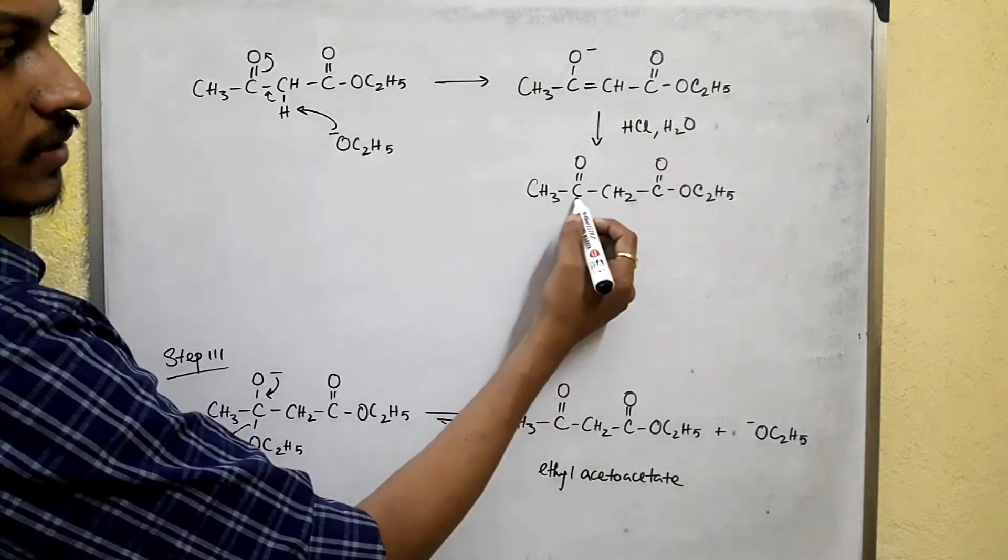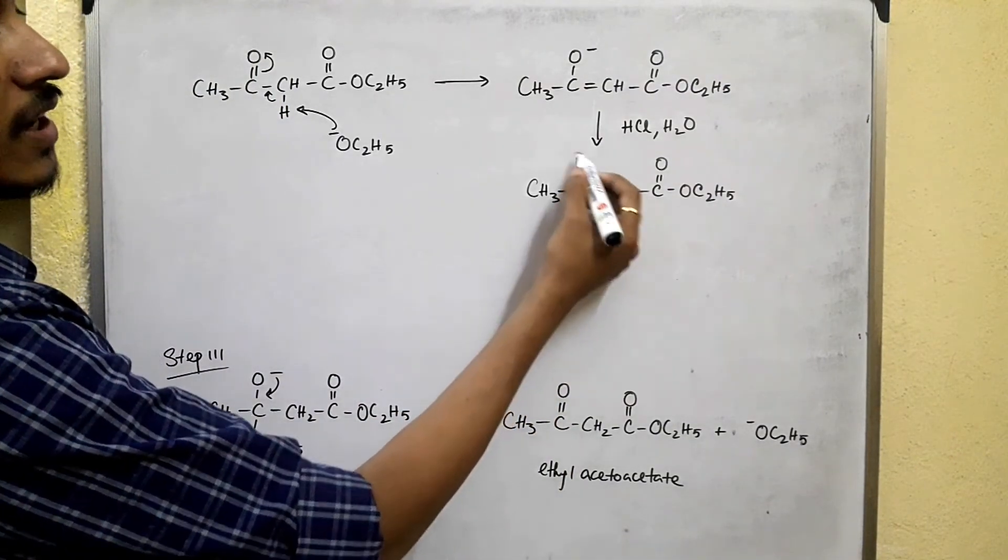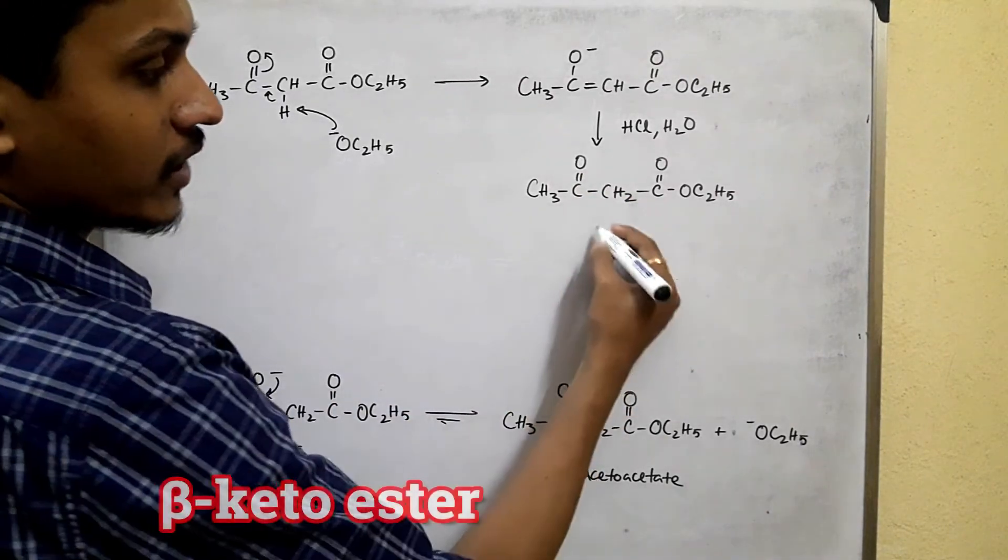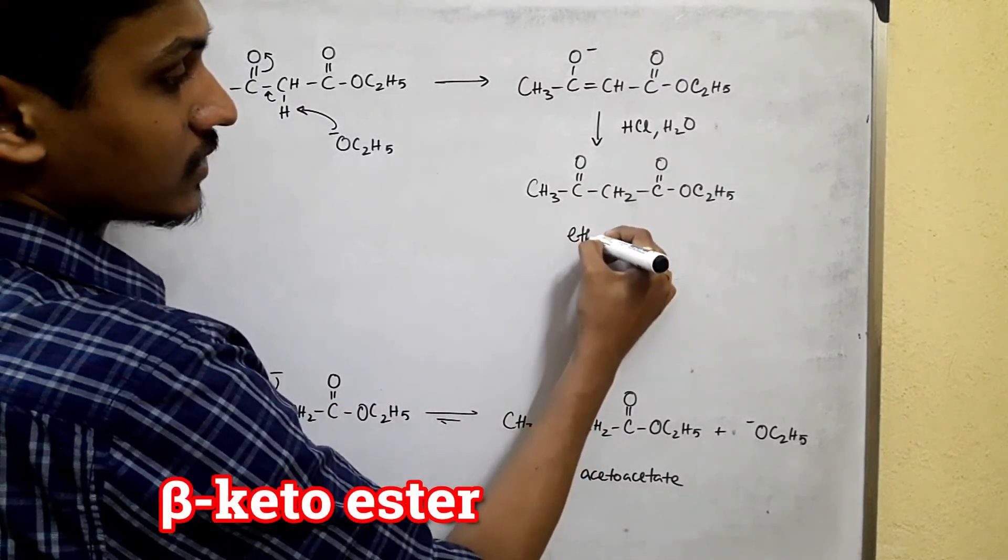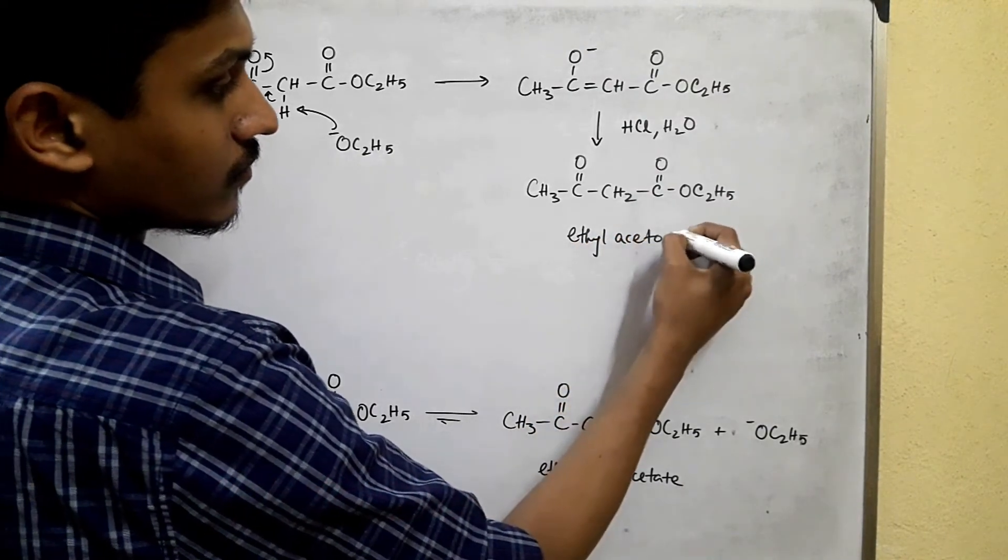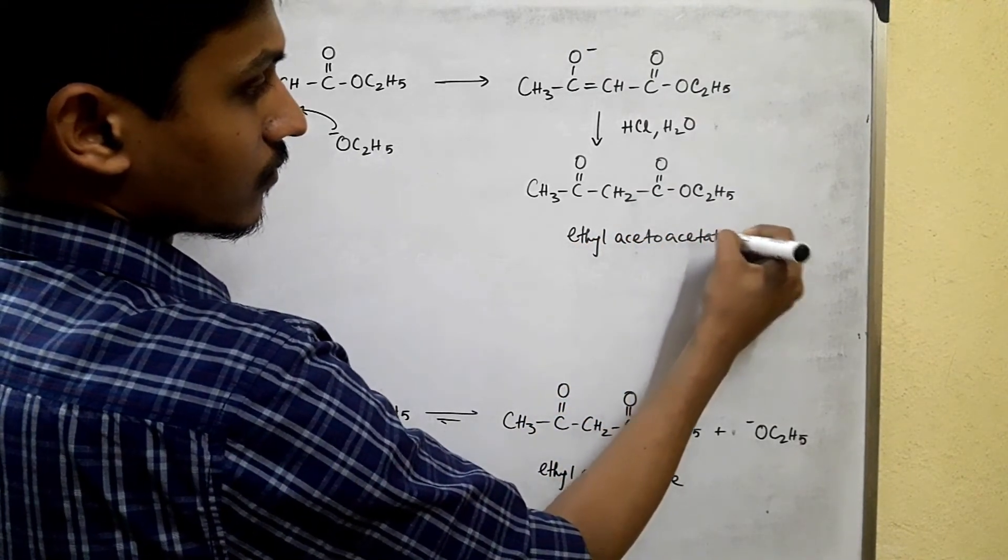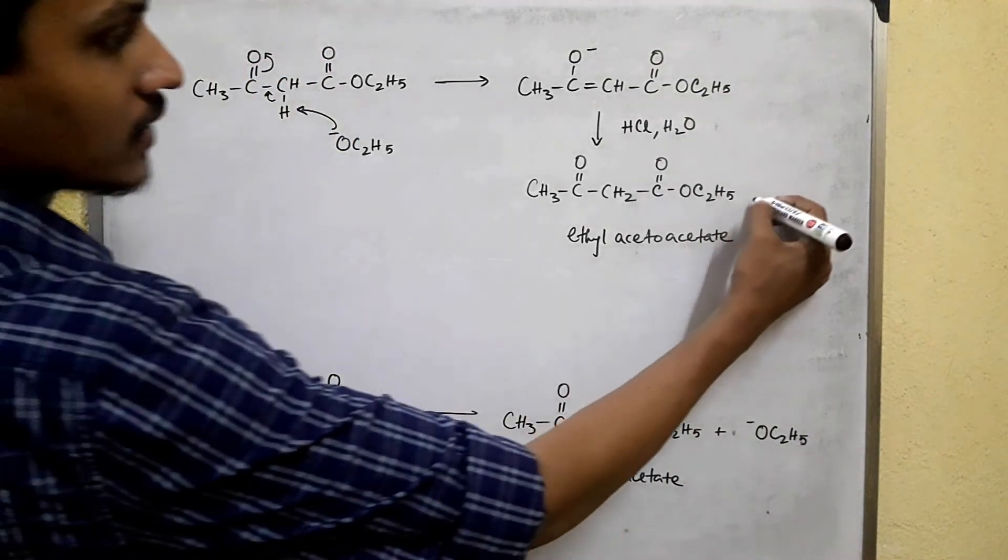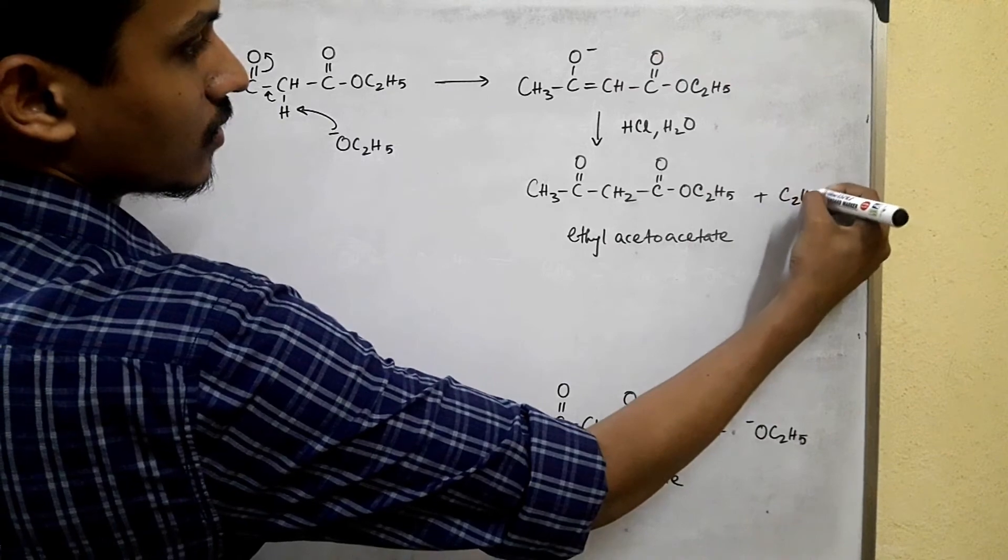This is the alpha carbon and this is the beta carbon. So beta carbon has the ketonic group. So beta-ketoester or ethyl acetoacetate plus the byproduct alcohol.